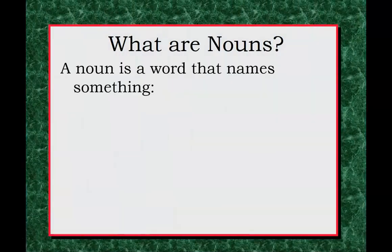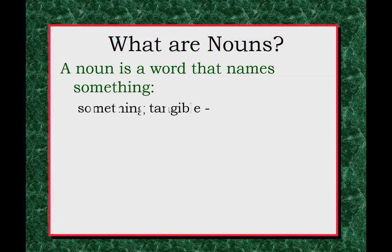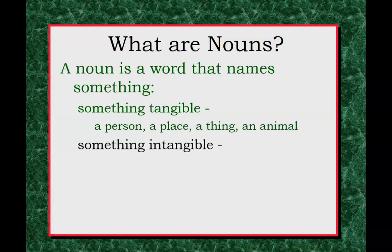What are nouns? Nouns are words that name something. They can be something tangible — something you're able to touch or hold. Those tend to be a person, place, thing, or animal. They can also be something considered intangible or abstract. Sometimes tangible things are called concrete and intangible things are called abstract.